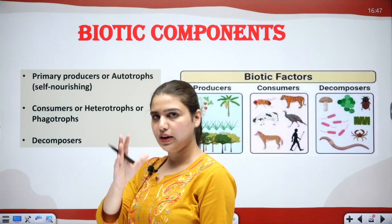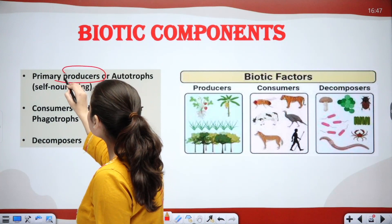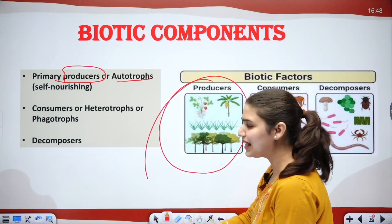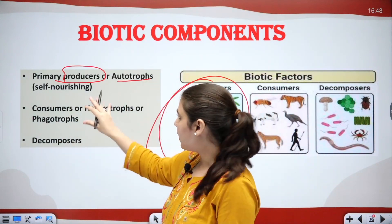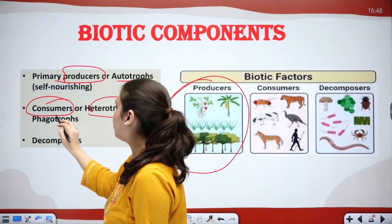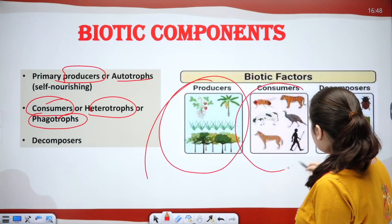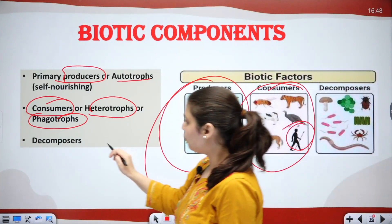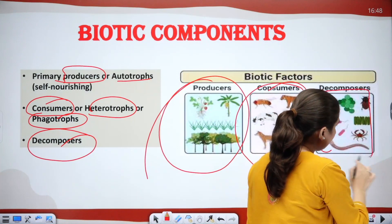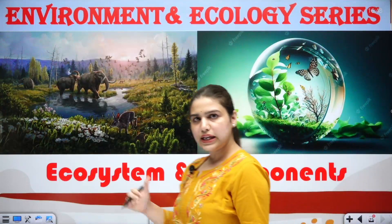Now moving to biotic components — our living components. First, we have primary producers, also called autotrophs; plants can make their own food and come under this category. Then we have consumers, also called heterotrophs or phagotrophs, who are dependent on others — even human beings are consumers. Finally, we have decomposers, who feed on dead plants and dead animals. These are our biotic components.